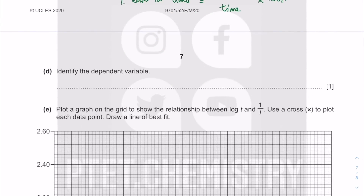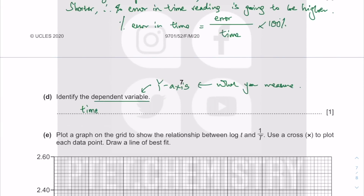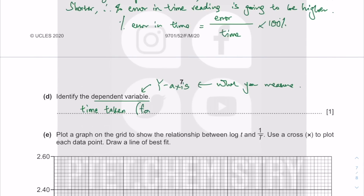Next: identify the dependent variable. The y-axis is typically the dependent variable — it's what you measure. We change the temperature, and we measure the time taken for the reaction to occur — specifically, the time taken for the purple-colored KMnO₄ solution to become decolorized.